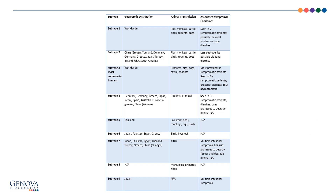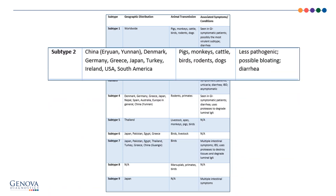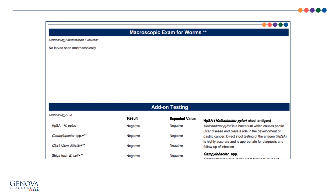Looking at blastocystis subtype 2, it has a worldwide distribution. It is possible he picked it up on his trip to China, but it can also be found in the United States where he lives. The literature is mixed on pathogenicity of the subtypes, but some suggest subtype 2 is the less pathogenic subtype, although it can be associated with diarrhea. The macroscopic for worms add-on was negative, and all four add-on pathogenic bacteria were negative. Because calprotectin is a neutrophil-mediated inflammatory marker, it can also be elevated with bacterial infections, so seeing negative results here makes us think even more about inflammatory bowel disease as the cause.